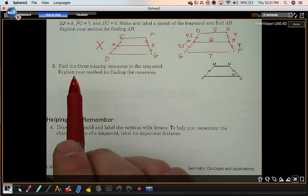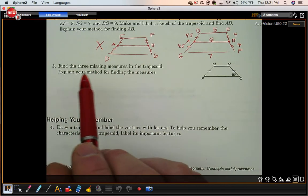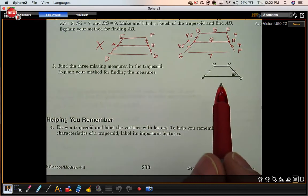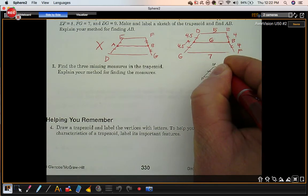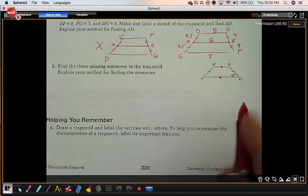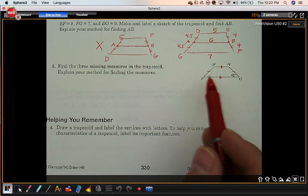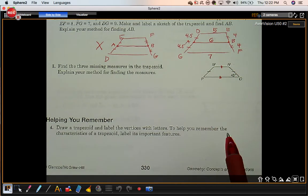Number three: Find the three missing measures in the trapezoid. Explain your method for finding the measures. They're telling you this is a trapezoid, so these are the parallel sides. These sides are congruent, those are the legs, so this is an isosceles trapezoid.